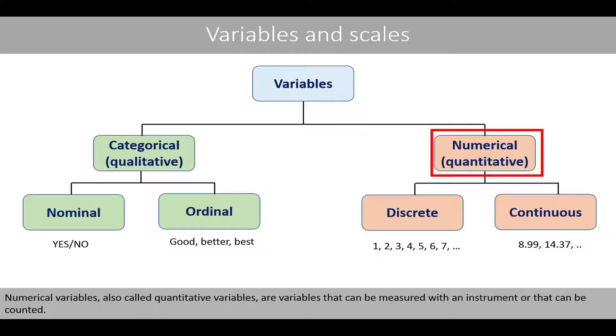Numerical variables, also called quantitative variables, are variables that can be measured with an instrument or that can be counted.